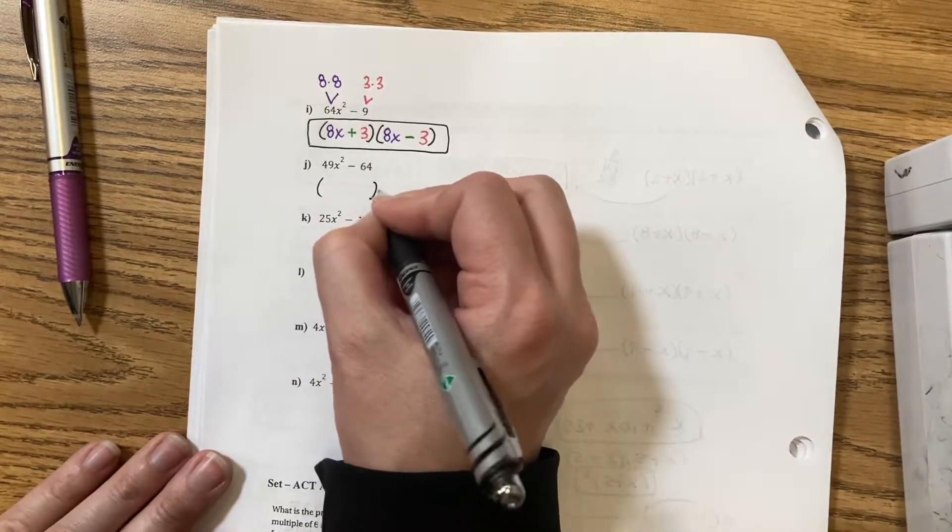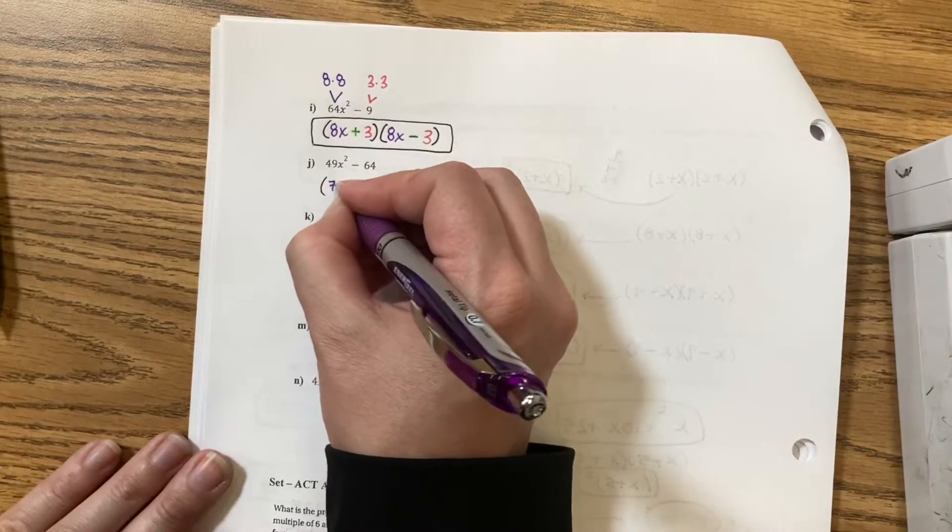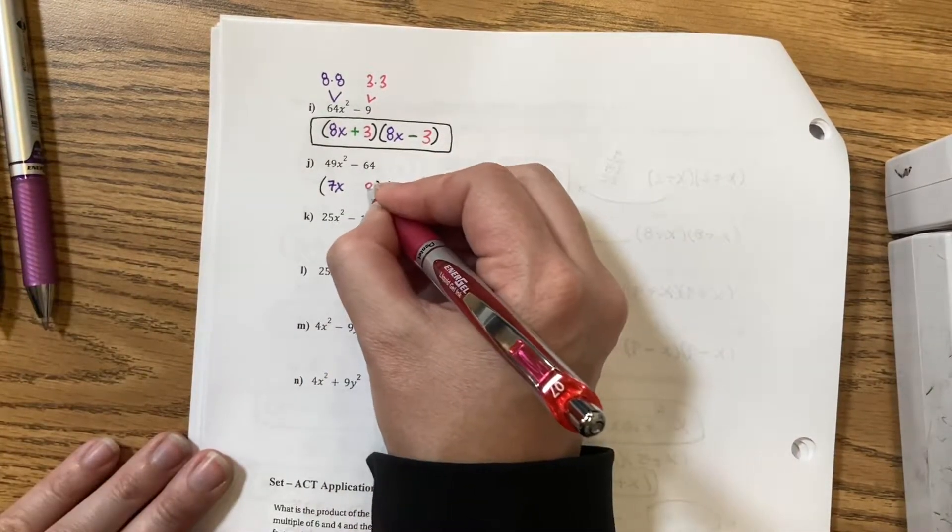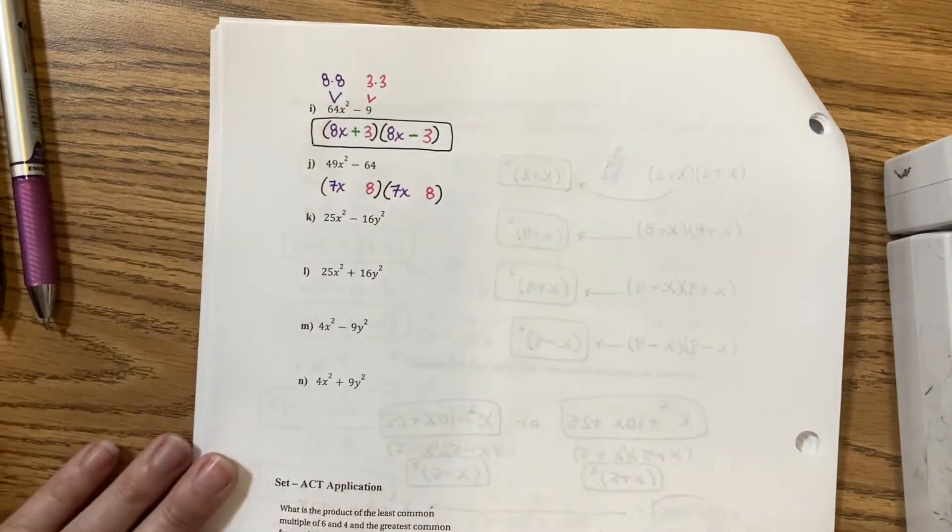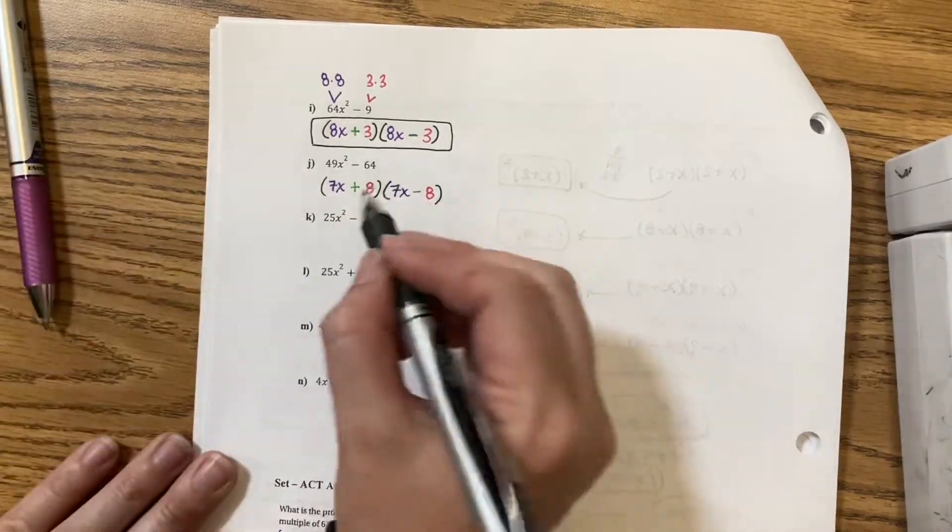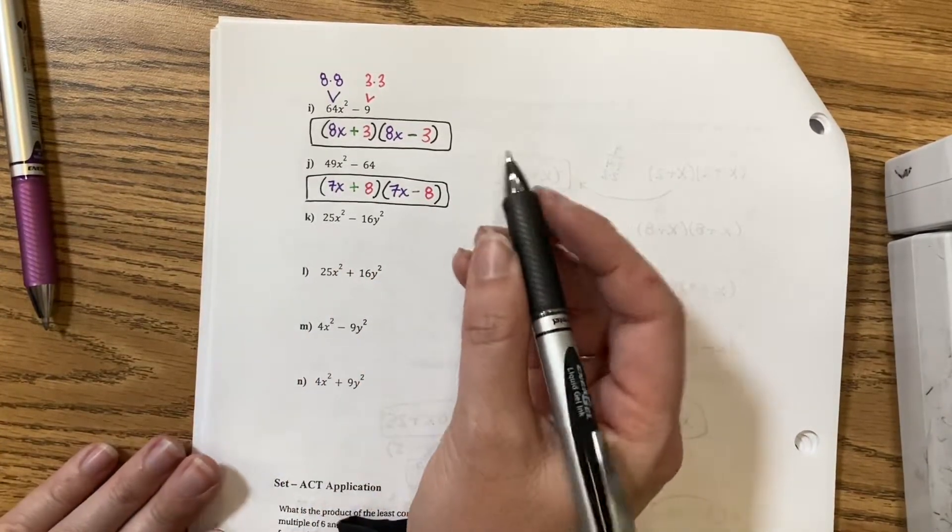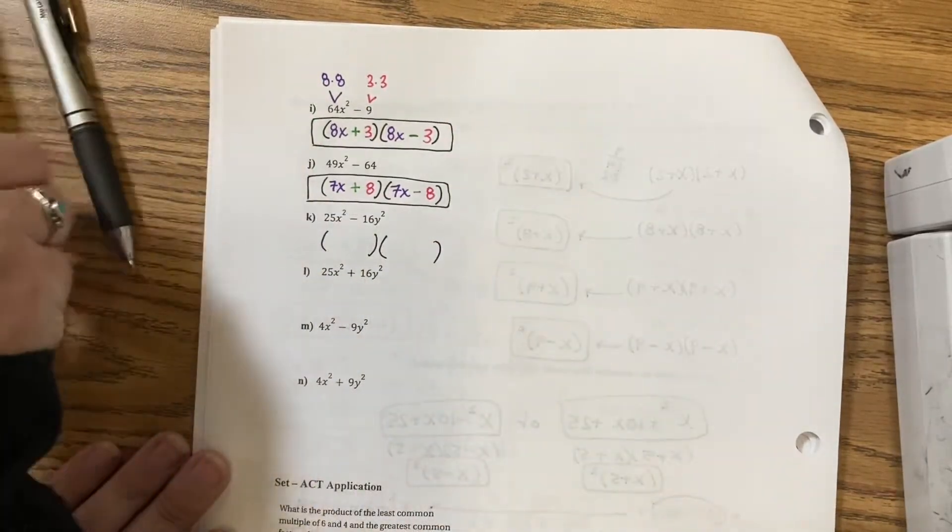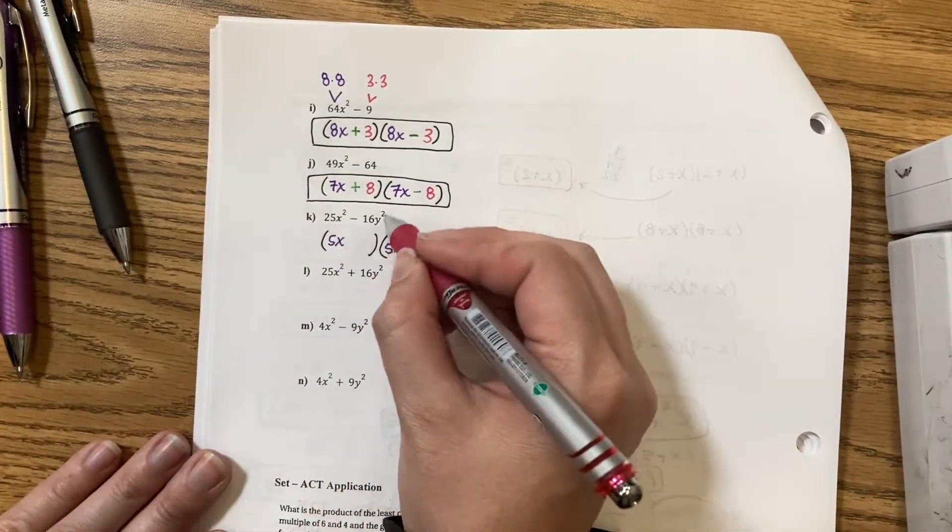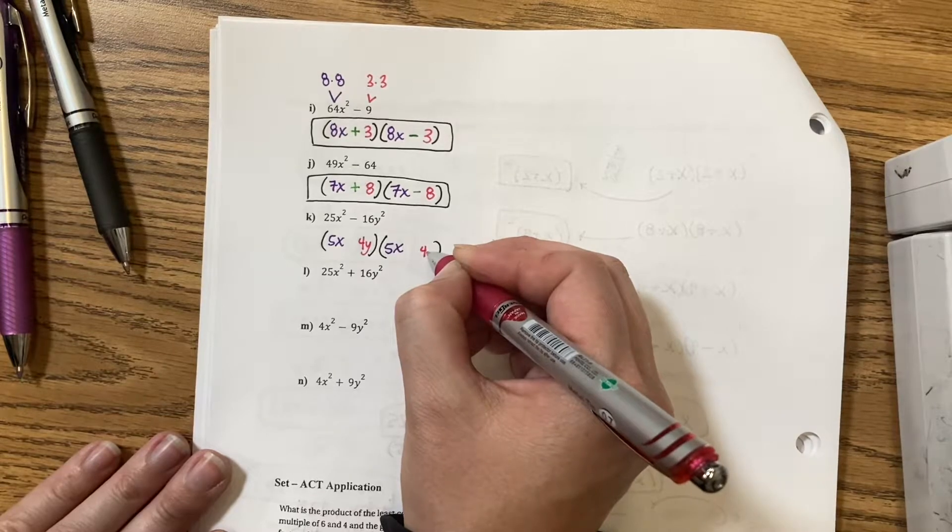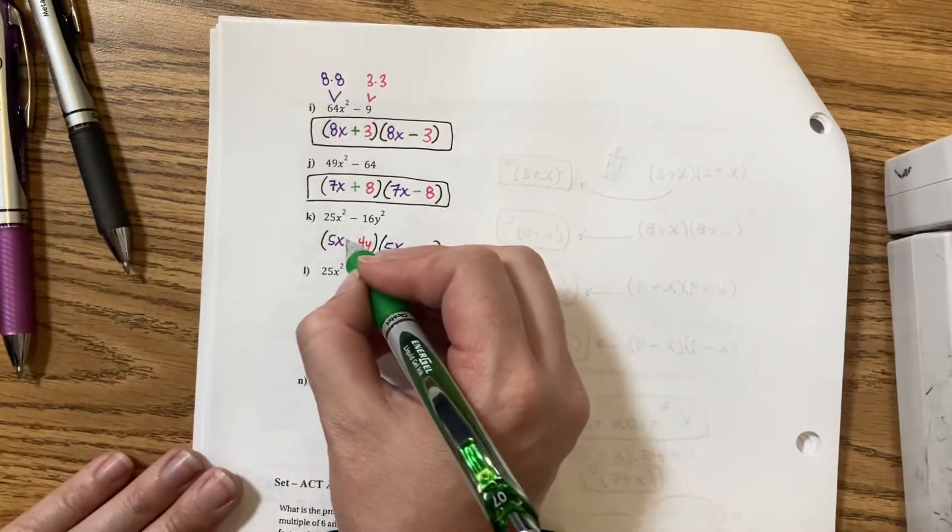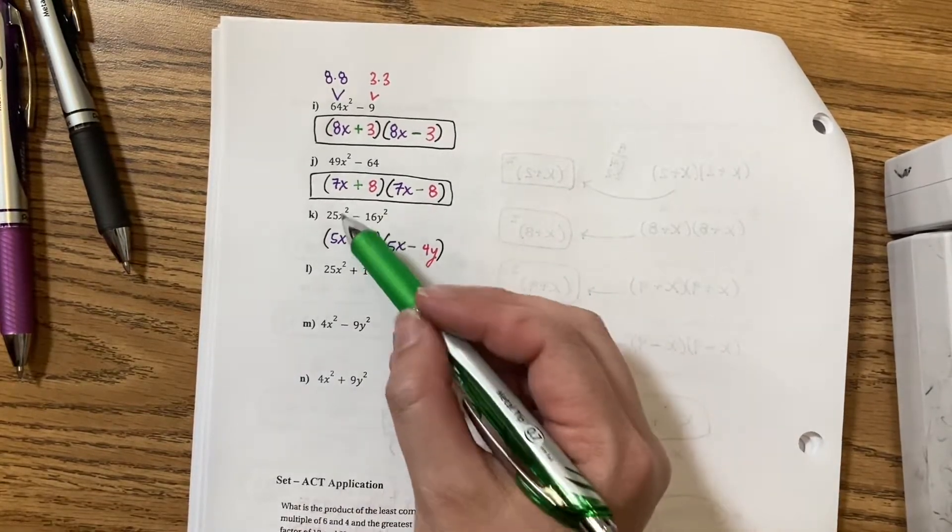So, 49 would be 7x times 7x. 64 is 8 times 8. And then, my signs will be a negative or a positive and a negative so that the middle eliminates and there's no middle term. So, 25 is 5x times 5x. 16 is 4y times 4y. To get a middle term to cancel out, I would need a positive and a negative value so that it eliminates in the center.